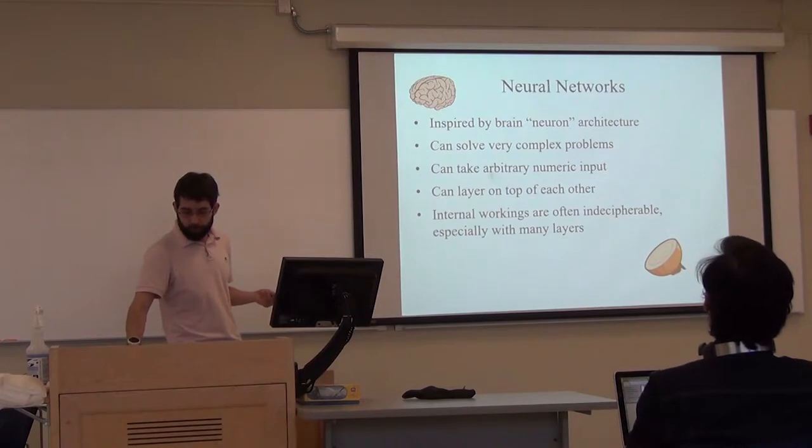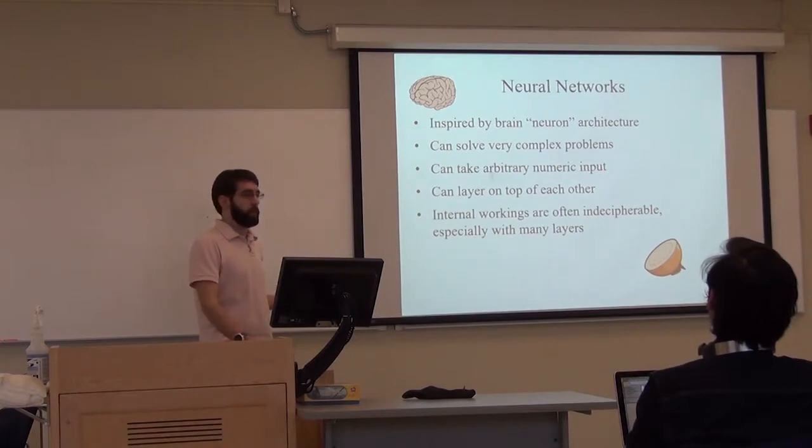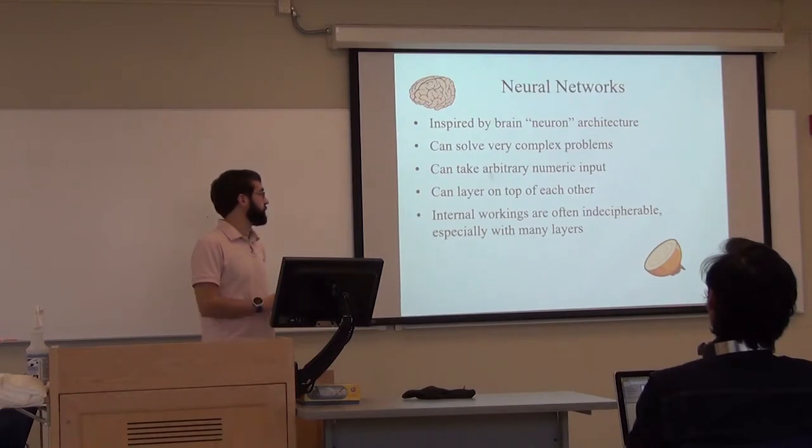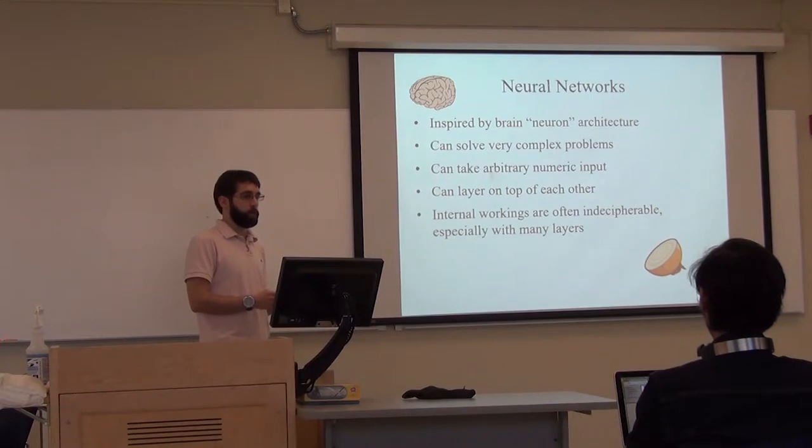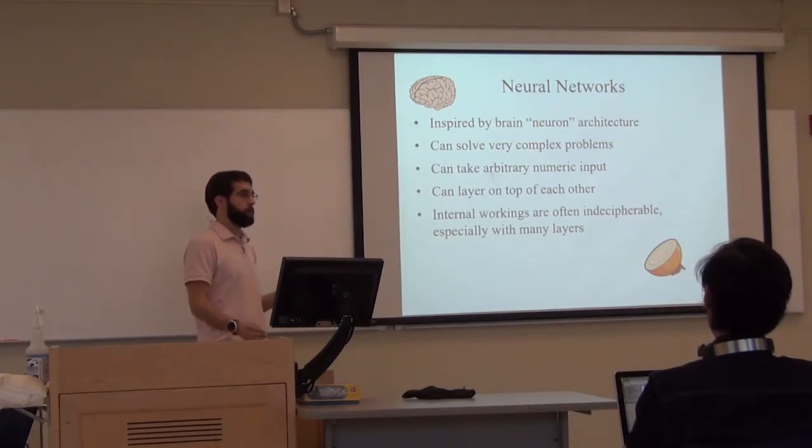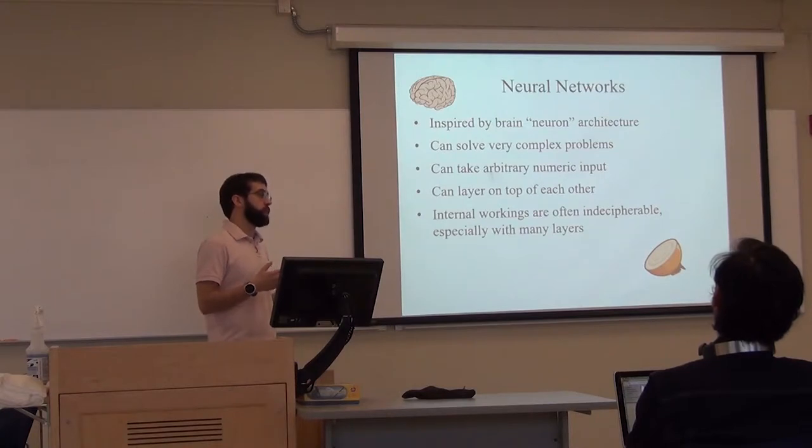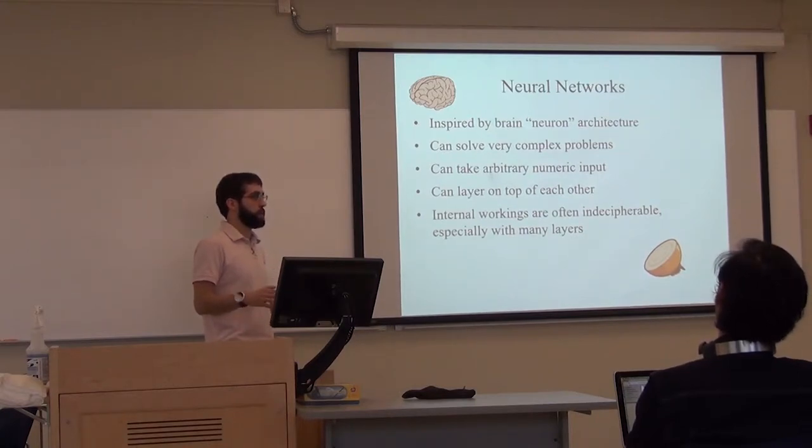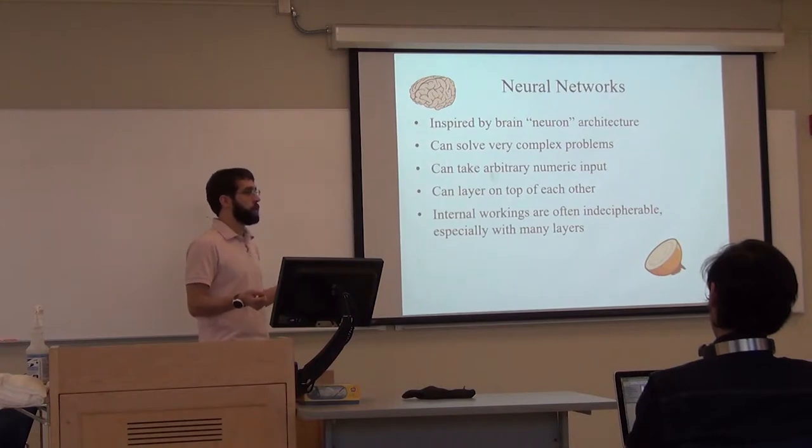A quick introduction to neural networks. You may have heard things about deep learning neural networks in the news or science articles. This is a machine learning algorithm that's inspired by brain-neuron architecture. It's very popular because it can solve complex problems such as image recognition, voice recognition, and pretty much any kind of complicated problem that you can imagine. It can take arbitrary numeric input. You can layer them on top of each other. The main problem with neural networks in many cases is that you don't know exactly what the model does. There could be millions or even billions of variables representing the inner workings of it, and no human can decipher what that means.